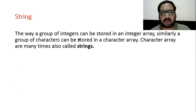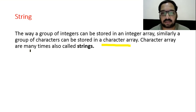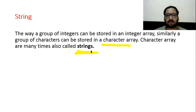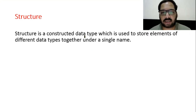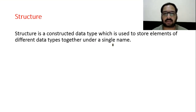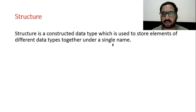String: just as a group of integers can be stored in an integer array, a group of characters can be stored in a character array. Character arrays are many times also called strings. A string has a special property that a null character is automatically inserted at the end, which allows us to identify the total number of characters.